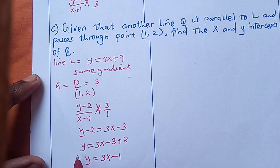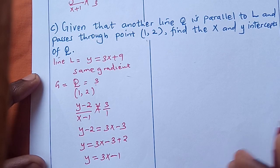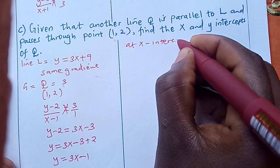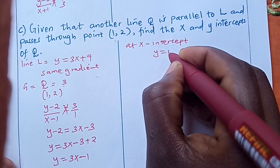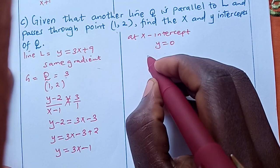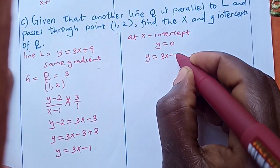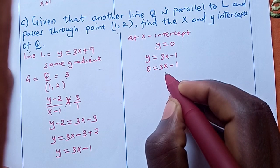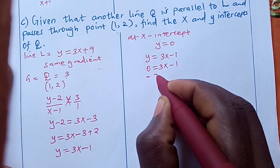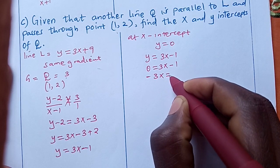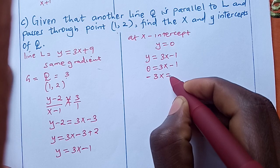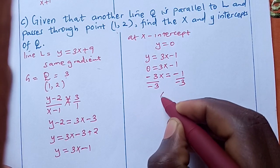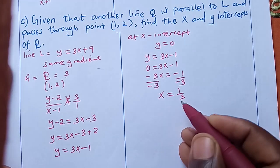We are not yet done. We have been told to find the x and y intercepts. At the x-intercept, y = 0. Back to the equation y = 3x - 1, we replace y with 0: 0 = 3x - 1, so 3x = 1, giving x = 1/3. This is the x-intercept.